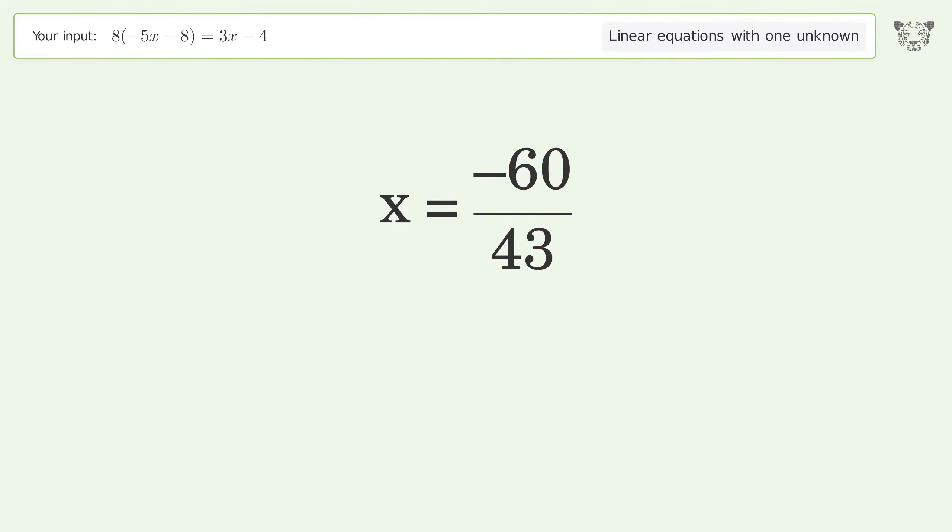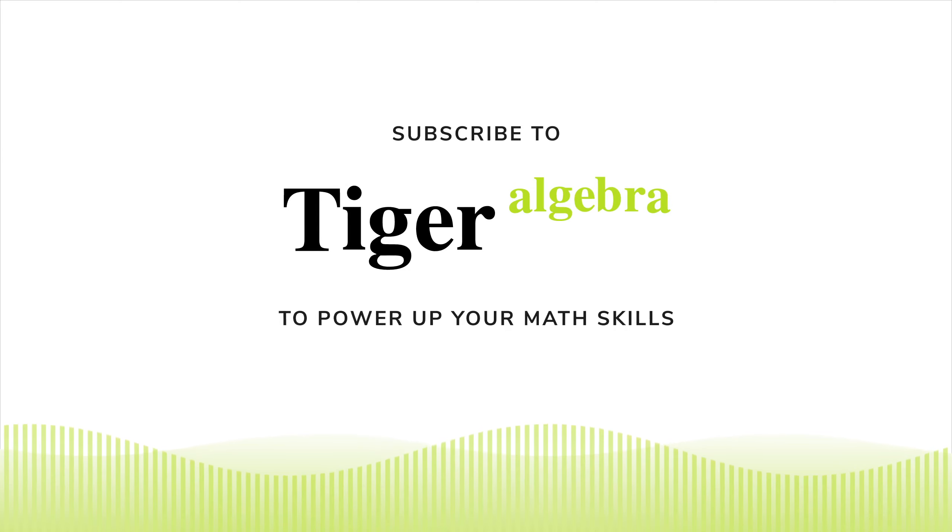And so the final result is x equals negative 60 over 43.